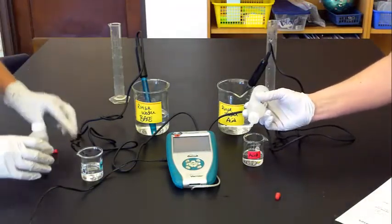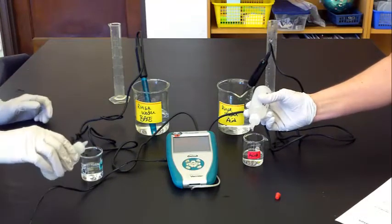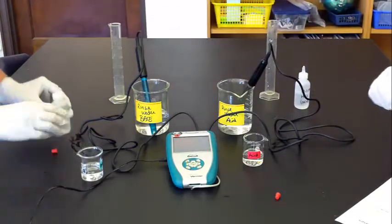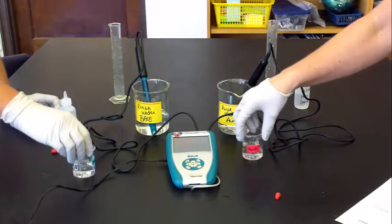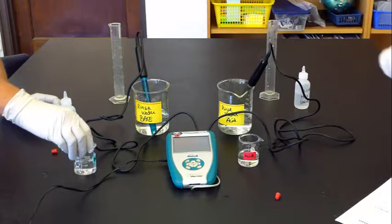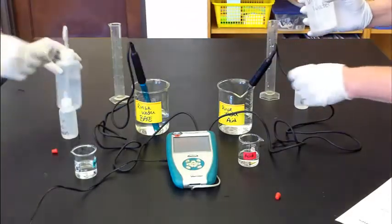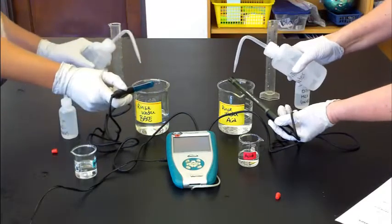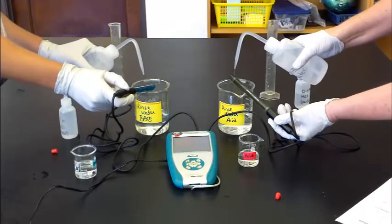So before you use your probe in your next solution, you simply rinse off the probe, especially the glass bulb. There will be fluctuation in the numbers. Once it stopped jumping around, just take a measurement.